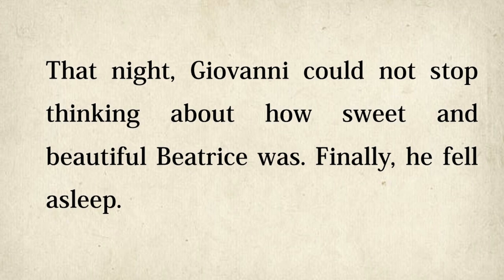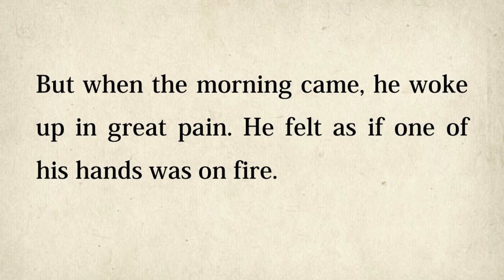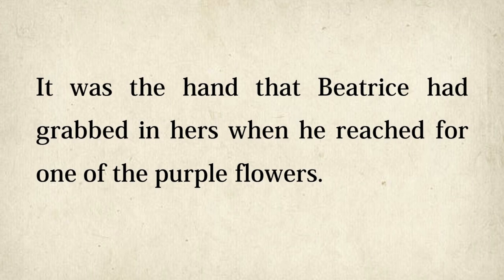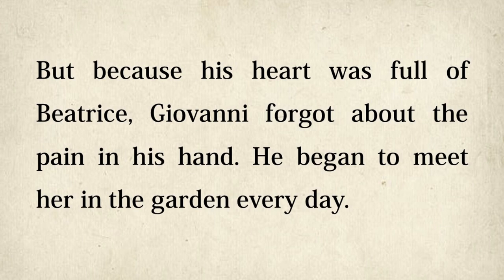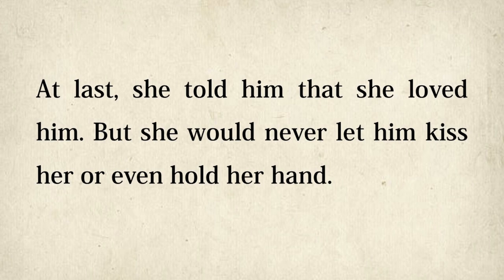That night, Giovanni could not stop thinking about how sweet and beautiful Beatrice was. Finally, he fell asleep. But when the morning came, he woke up in great pain. He felt as if one of his hands was on fire. It was the hand that Beatrice had grabbed in hers when he had reached for one of the purple flowers. Giovanni looked down at his hand. There was a purple mark on it that looked like four small fingers and a little thumb. But because his heart was full of Beatrice, Giovanni forgot about the pain in his hand. He began to meet her in the garden every day. At last, she told him that she loved him. But she would never let him kiss her or even hold her hand.